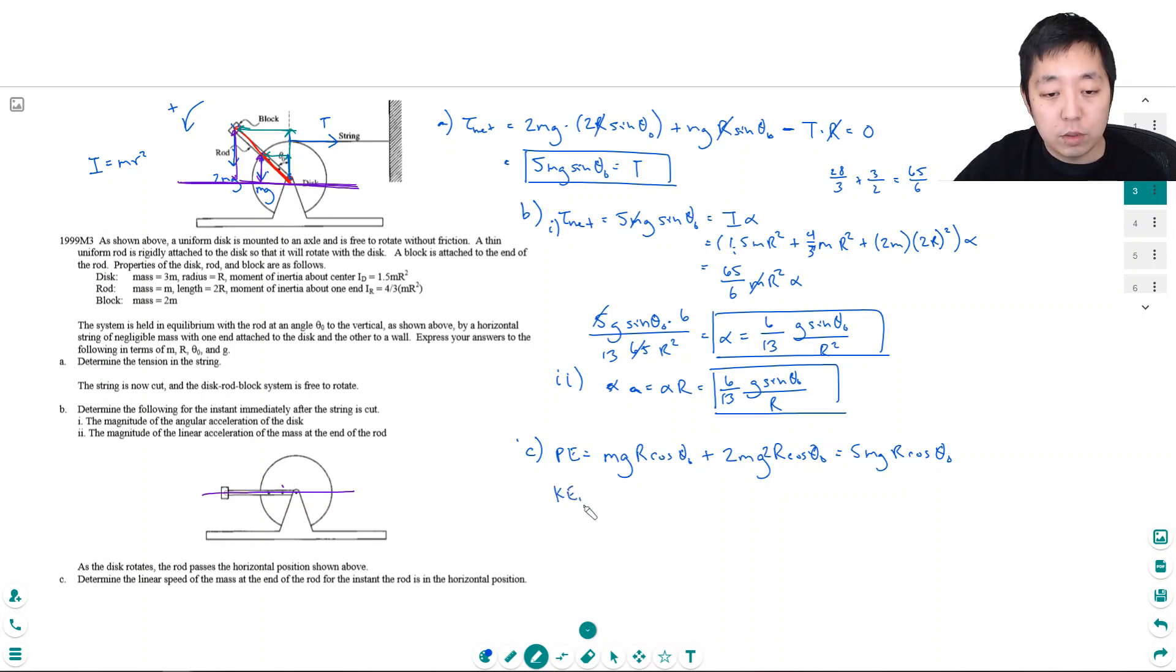Then it all turns into kinetic rotational energy, which is equal to 1 half I omega squared. Well we calculated what I of this system was. I was the sum of these systems, which was 65 over 6 MR squared, and then times omega squared.